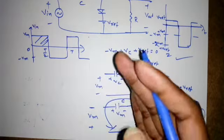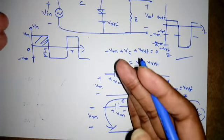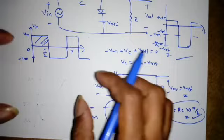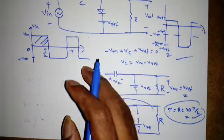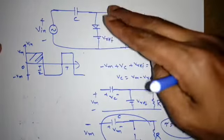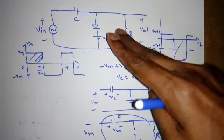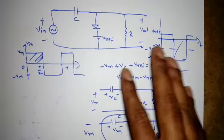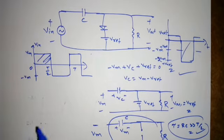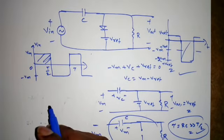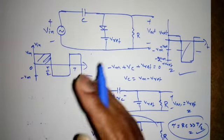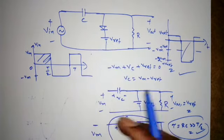In the next lecture we will cover positive clampers — both unbiased and biased. If you understand negative clampers, positive clampers are just the opposite: reverse the diode and the analysis is the same. You can try on your own, and if you have any doubts on the biased negative clamper, post a comment so we can discuss.